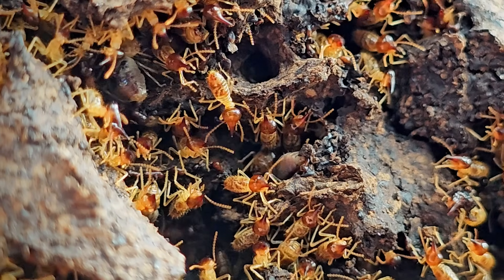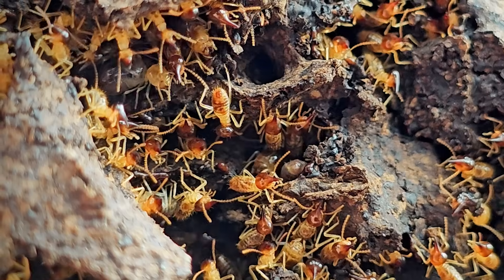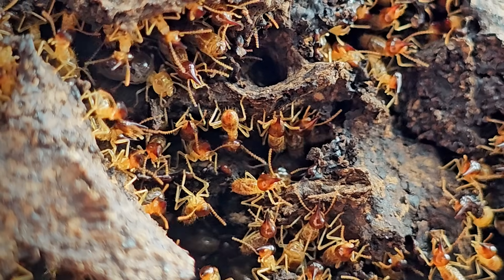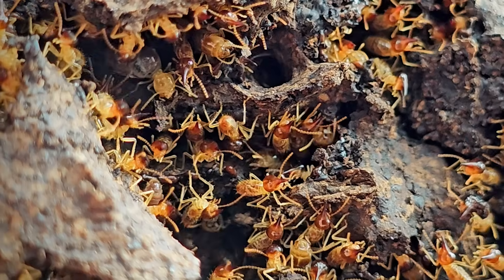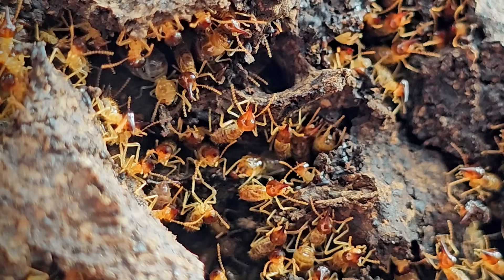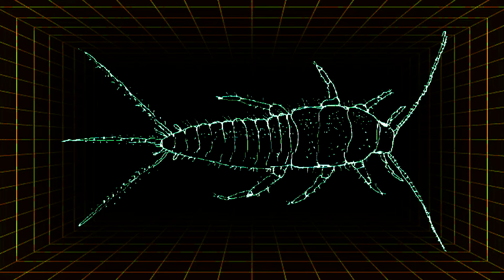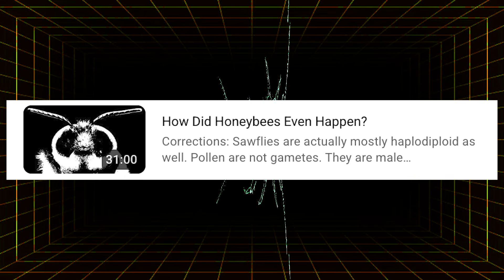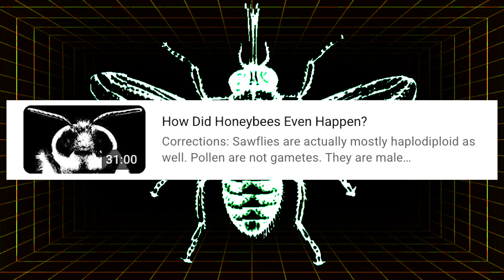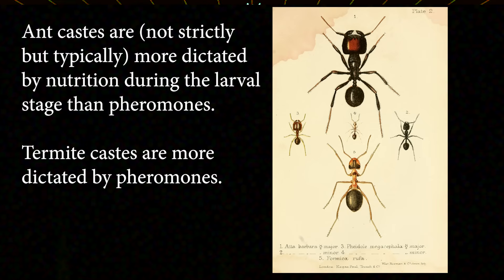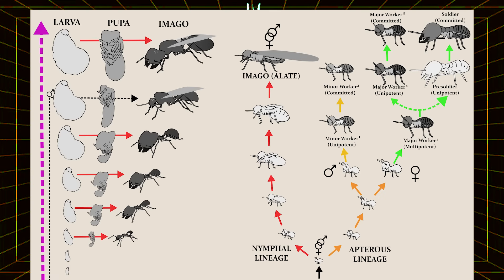The eusociality — which is colony forming behavior found within termites — is different from the eusociality found within ants, bees, and wasps. I explained haplodiploidy in a previous video, which is one of the factors Hymenoptera use to effectively allocate tasks among their castes, allowing for far more differentiation among individuals in a colony due to more varied selective pressures being placed upon those individuals.